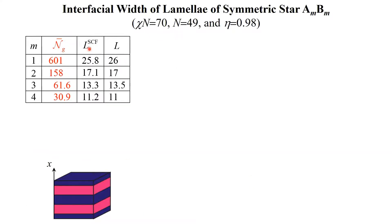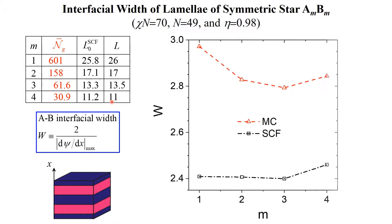By fixing the total chain length n, we see that n-bar-g decreases with increasing m. We again consider the lamellae oriented in the x-direction at a fixed period L and calculate the A-B interfacial width W in both Monte Carlo simulations and self-consistent field calculations. We see that as m increases, the lamellae period decreases, but W remains nearly constant.